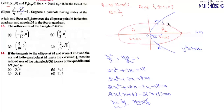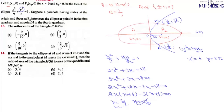For both points M and N, the x-coordinate is 3/2. Substituting back, y² = 4 × (3/2) = 6, so y = ±√6. Therefore M = (3/2, √6) in the first quadrant and N = (3/2, -√6) in the fourth quadrant.